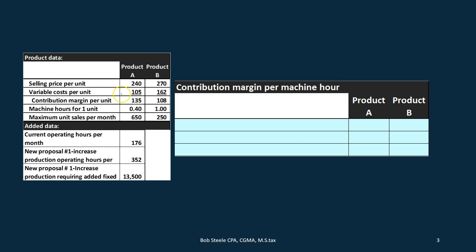We have variable costs of $105 and $162. If we subtract those out we get the contribution margin per unit. The contribution margin per unit is the selling price per unit less the variable costs per unit — that's what we get to keep after variable costs after each unit of production, not taking into consideration fixed costs, which we'll address later.